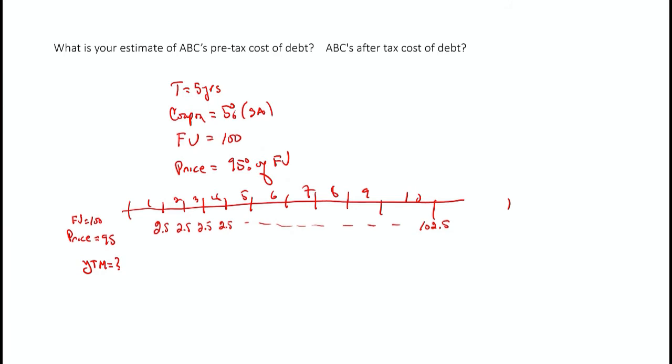So let's go back to what we have here. Our yield to maturity then is 6.18%, which we're going to assume is ABC's pre-tax cost of debt. Now, what about ABC's after-tax cost of debt?